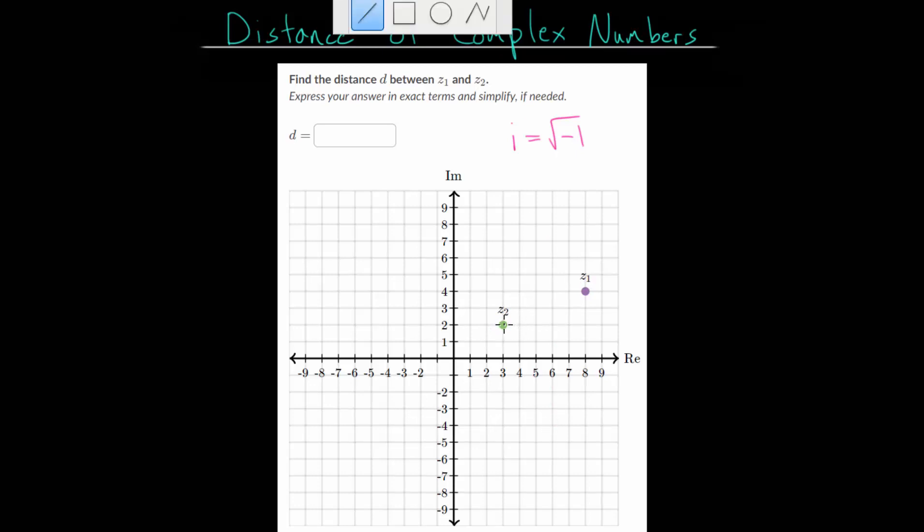In other words, if we draw a line between these two complex numbers, we need to figure out what the length of this line is. We can call that D for distance.